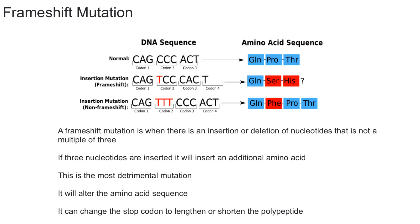Another consequence is that you can run into a premature stop codon, which will cut the protein short. Alternatively, you might not encounter a stop codon for a much longer time, causing a longer or bigger protein to be made.